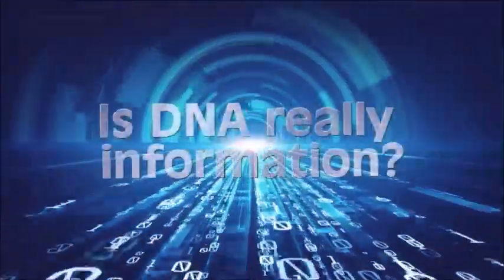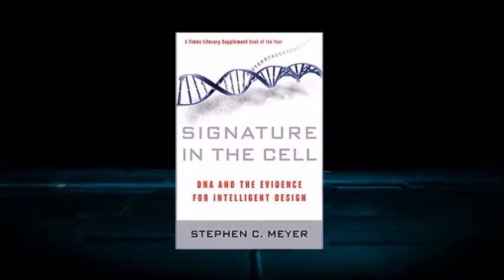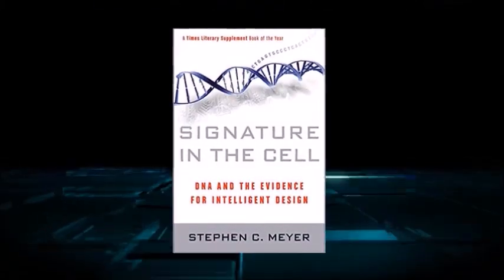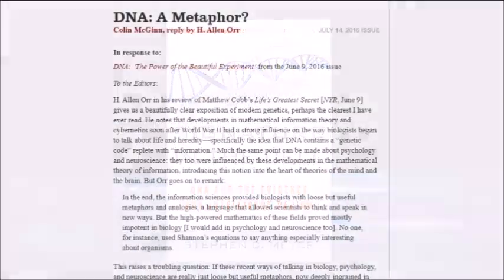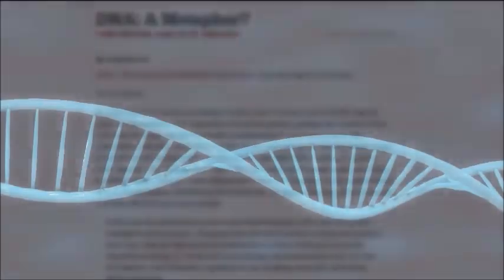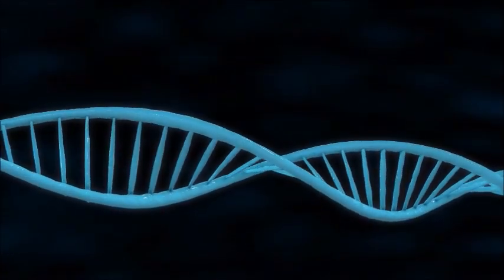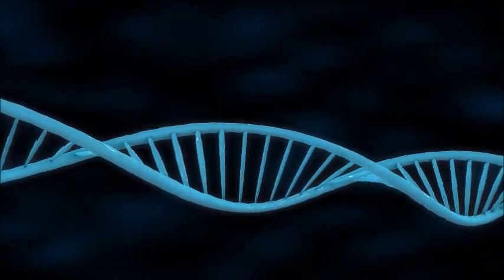Some critics of this argument for intelligent design deny the obvious. They claim that DNA is not really information, and that intelligent design proponents get carried away by a term that is simply convenient. According to them, information is just a metaphor to describe what DNA does. However, this is simply not true. DNA is, in a very rigorous sense, information, and this is revealed by an objective definition of the word information.